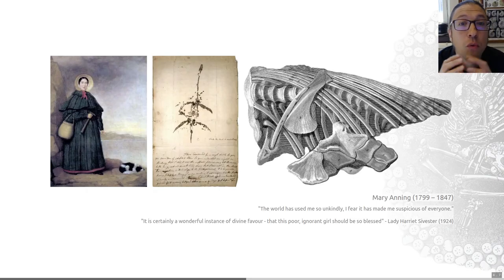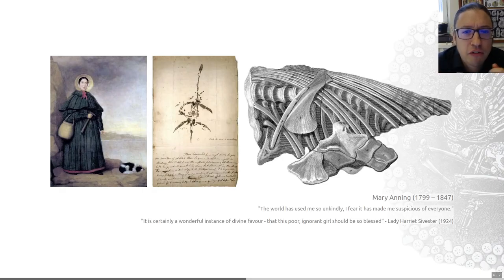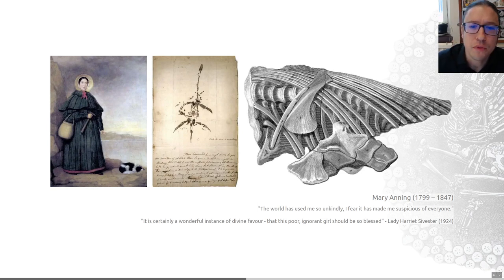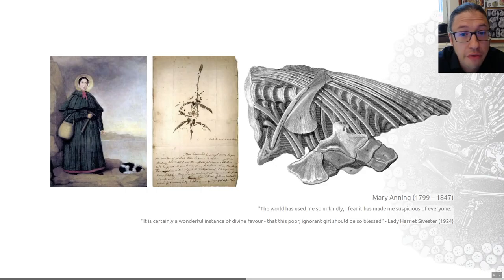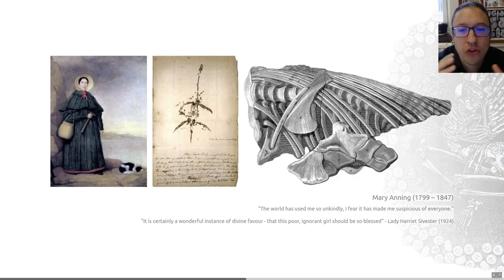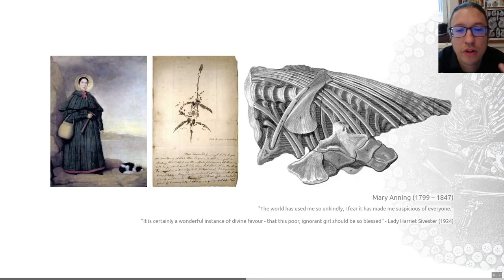That was one of the reasons why many of the discoveries of Mary Anning were first illustrated and described by other male scientists at the time who bought her discoveries off her. Her position in society was also made more marginal because she was a religious dissenter — she was not a member of the Church of England.